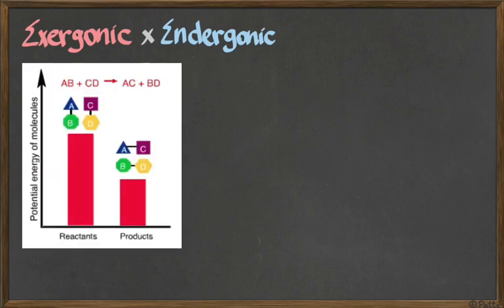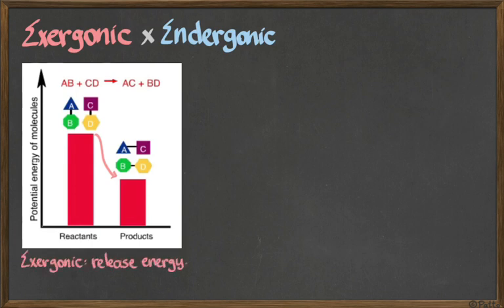Here we have an example of a chemical reaction where AB and CD are the reactants - they react together and end up making AC and BD. In this example, the products are less energetic than the reactants, so we have an exergonic reaction because it releases energy. Most of the time this energy is heat, but it could be other kinds of energy as well.